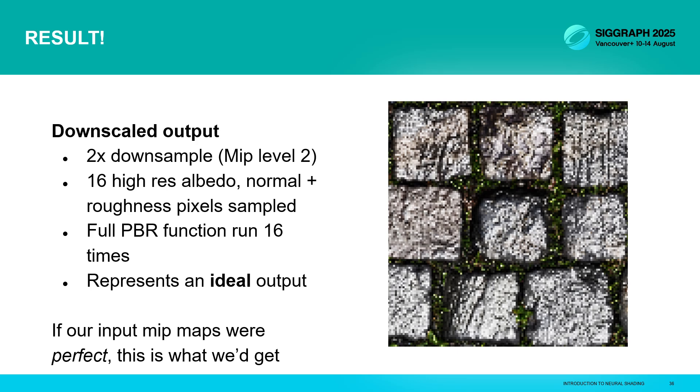Unfortunately, to do this, we've had to take 16 samples of the high res albedo, normal and roughness map per pixel. Then we've run our expensive PBR function 16 times and we've averaged the result. So this just isn't practical to do in real time. But it does represent what we might call an ideal output. If we could somehow create perfect mipmaps, this is what we'd want to see when we then render them.